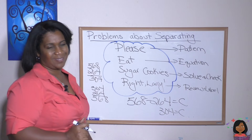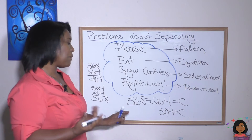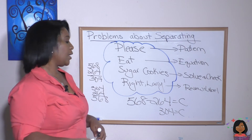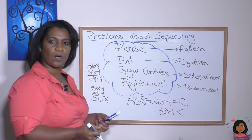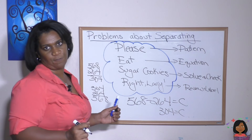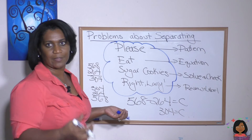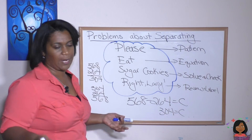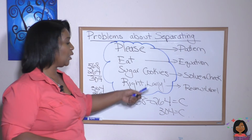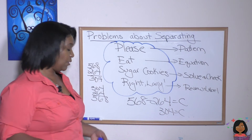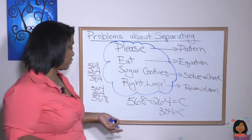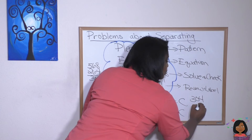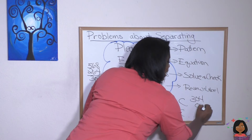Let's review. Does it make sense that if we started with 568 and packed up 264, we'd have about 304 left? That sounds right — it would be crazy if we had a thousand left. And our label: 304 cans of food is our answer.